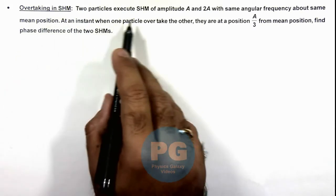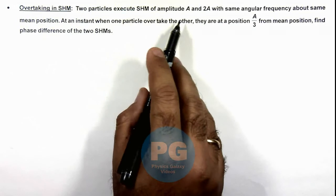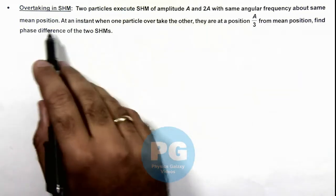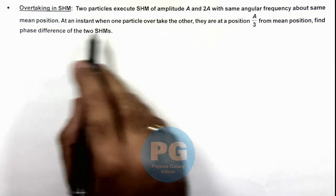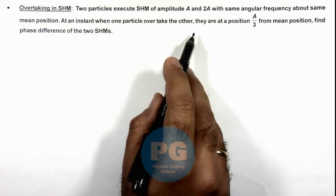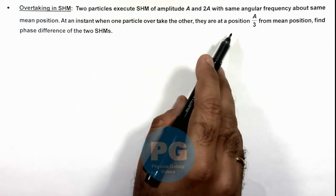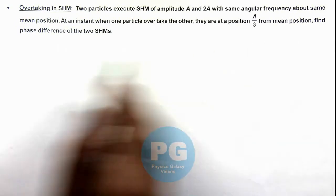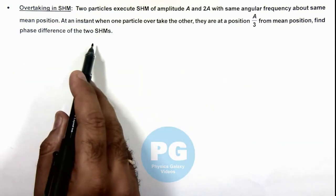Here we are given that two particles execute SHM of amplitude A and 2A with same angular frequency about same mean position. And we are given that at an instant one particle overtakes the other. They are at a position A/3 from mean position, and we are going to find the phase difference of the two SHMs.